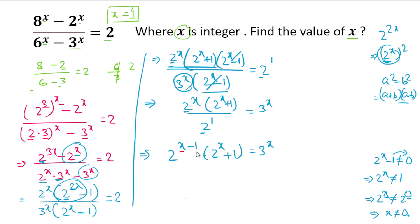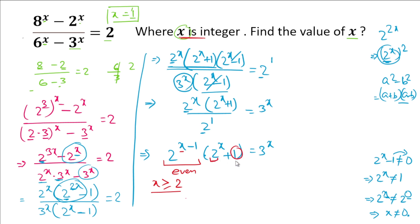Now we solve by comparison. For x ≥ 2: 2^(x-1) is even, and 2^x + 1 is odd (even plus 1). The product of an even and an odd number is always even, so the left-hand side is even for x ≥ 2.